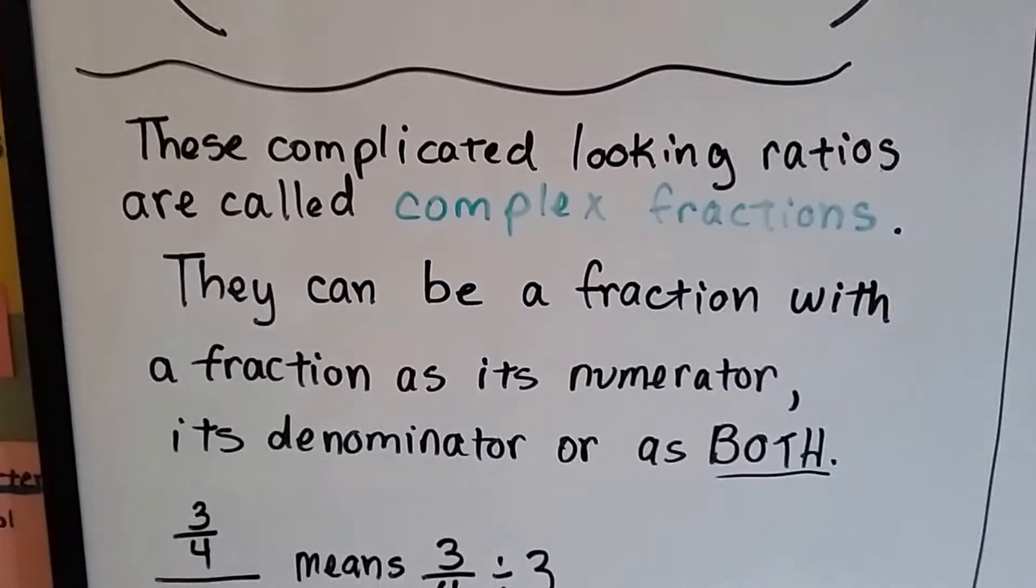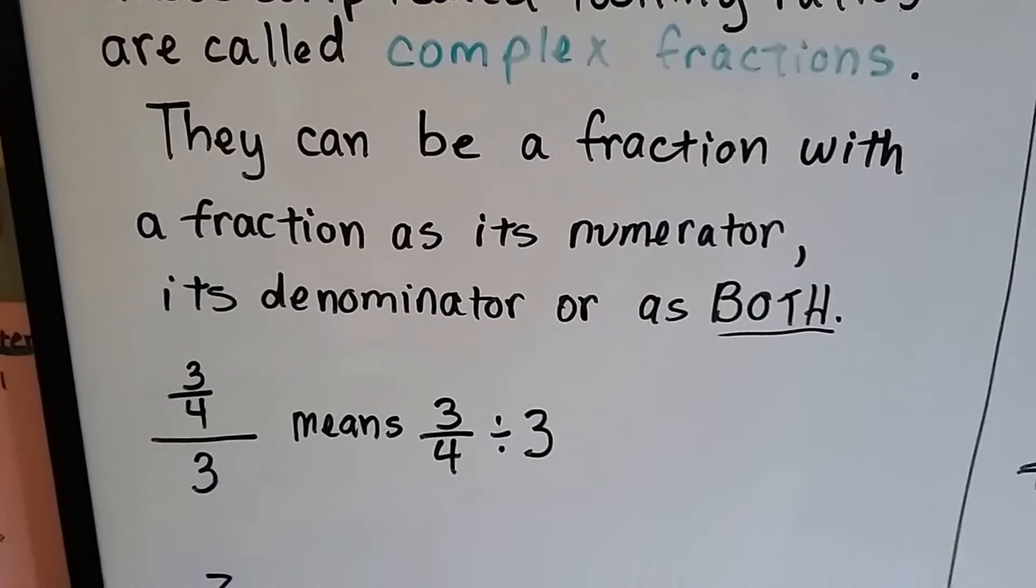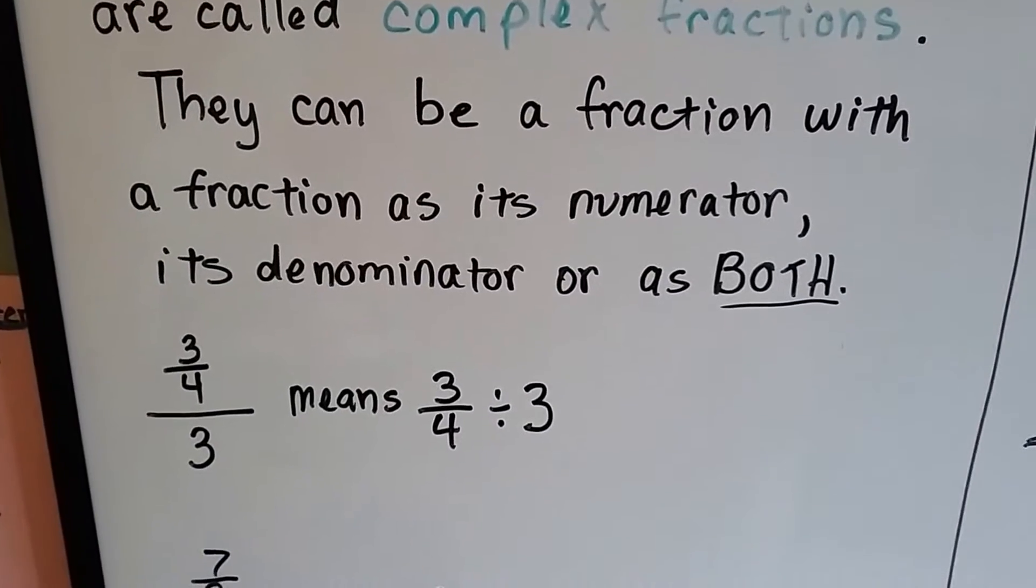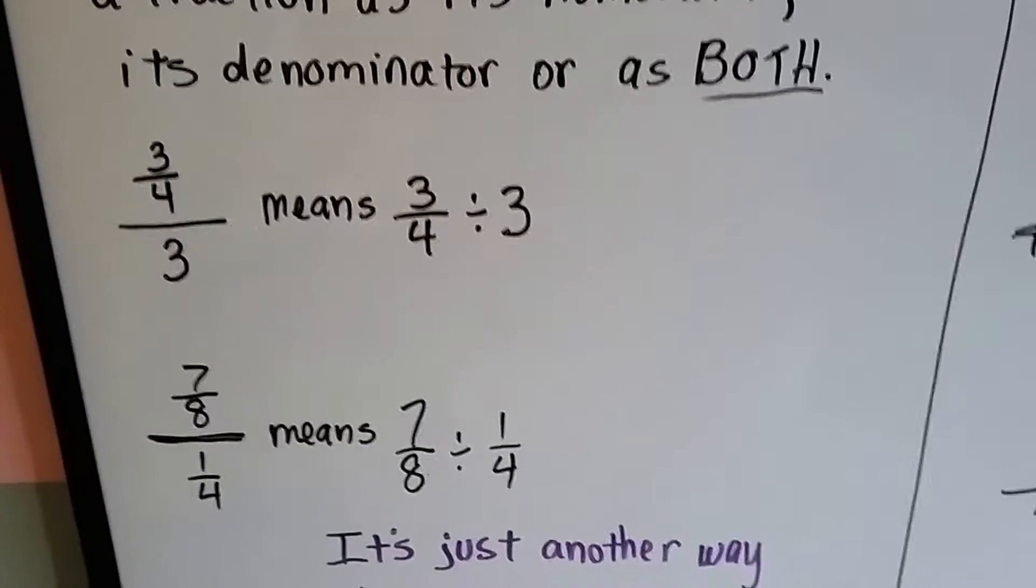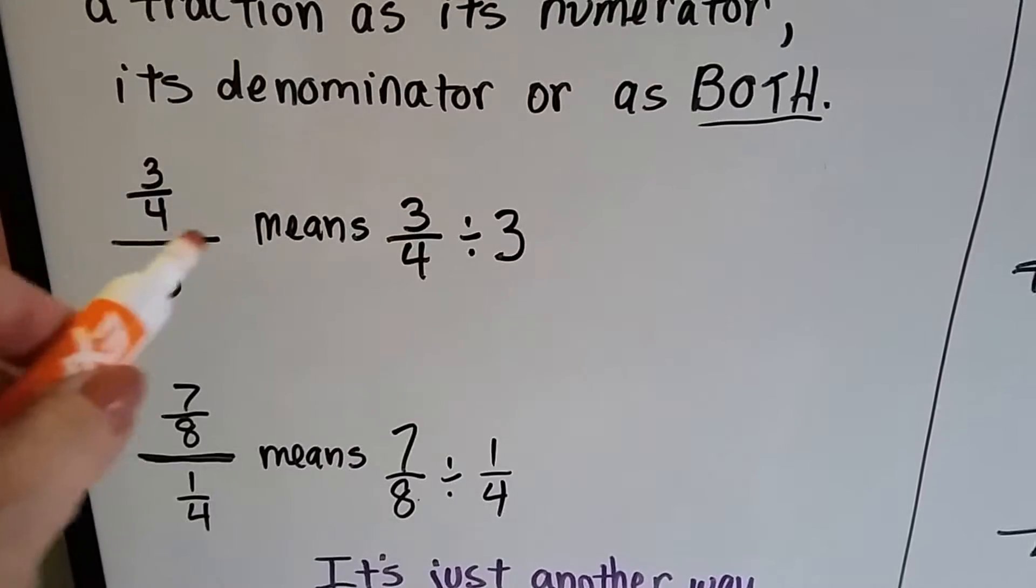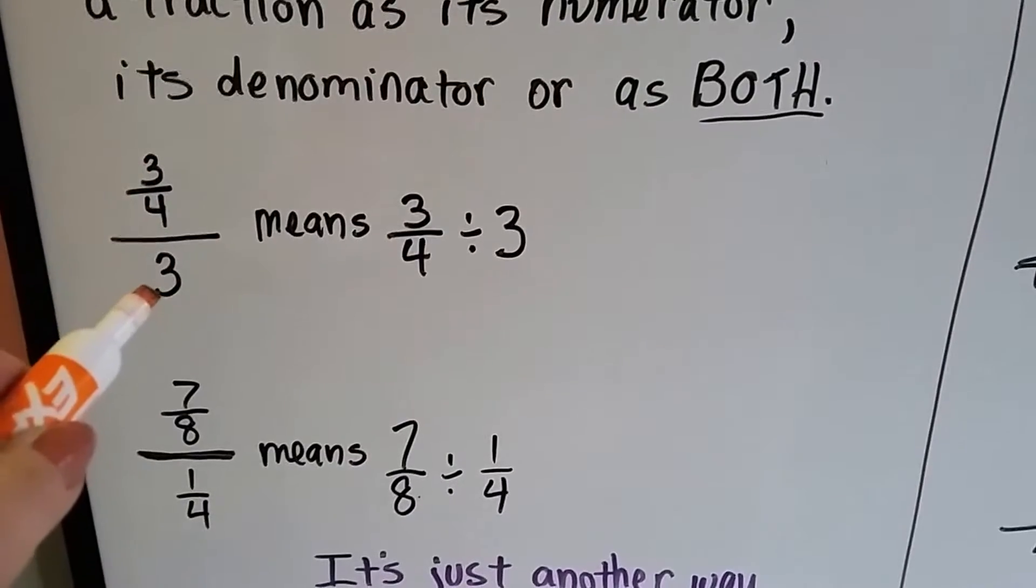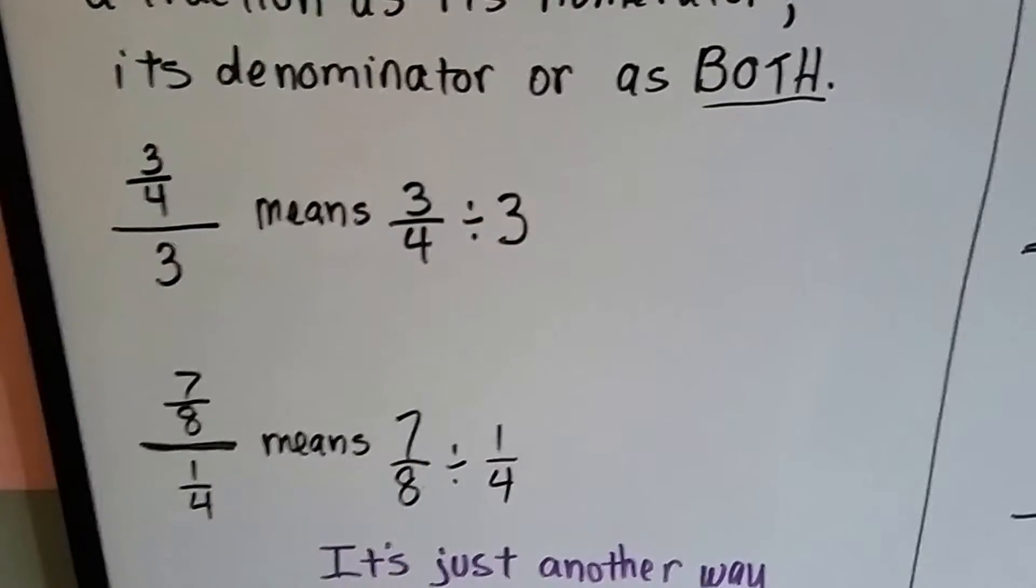These complicated-looking ratios are called complex fractions, and they can be a fraction with a fraction as its numerator, its denominator, or both. So we can have three-fourths, and then a fraction line, and then a three underneath it.